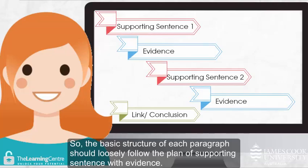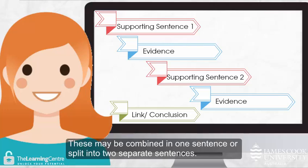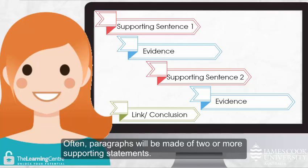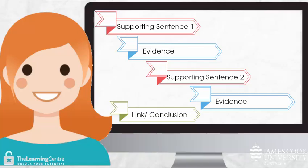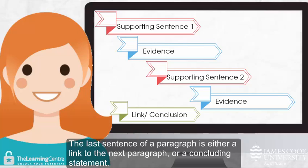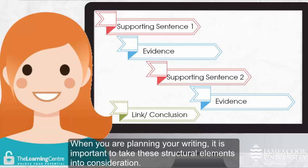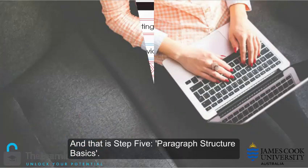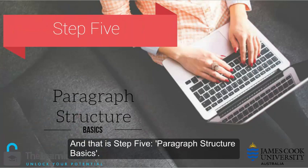The basic structure of each paragraph should loosely follow the plan of supporting sentence with evidence. These may be combined in one sentence or split into two separate sentences. Often, paragraphs will be made of two or more supporting statements. The last sentence of a paragraph is either a link to the next paragraph or a concluding statement. When you are planning your writing, it is important to take these structural elements into consideration. And that is step five, paragraph structure basics.